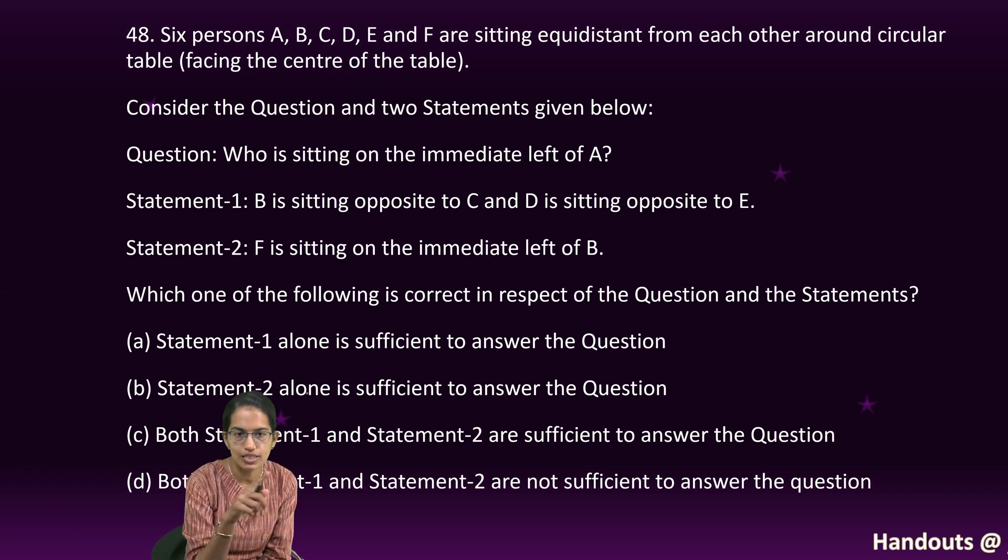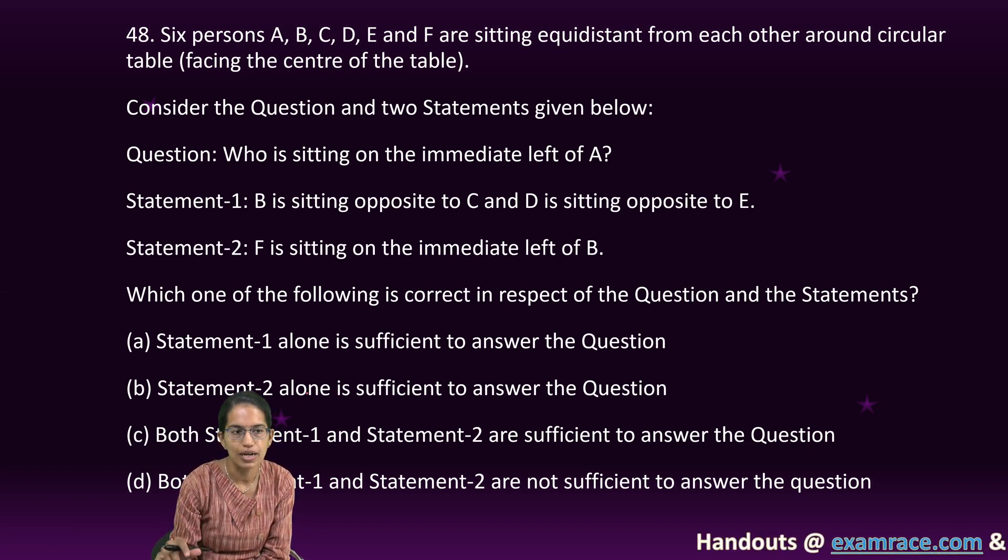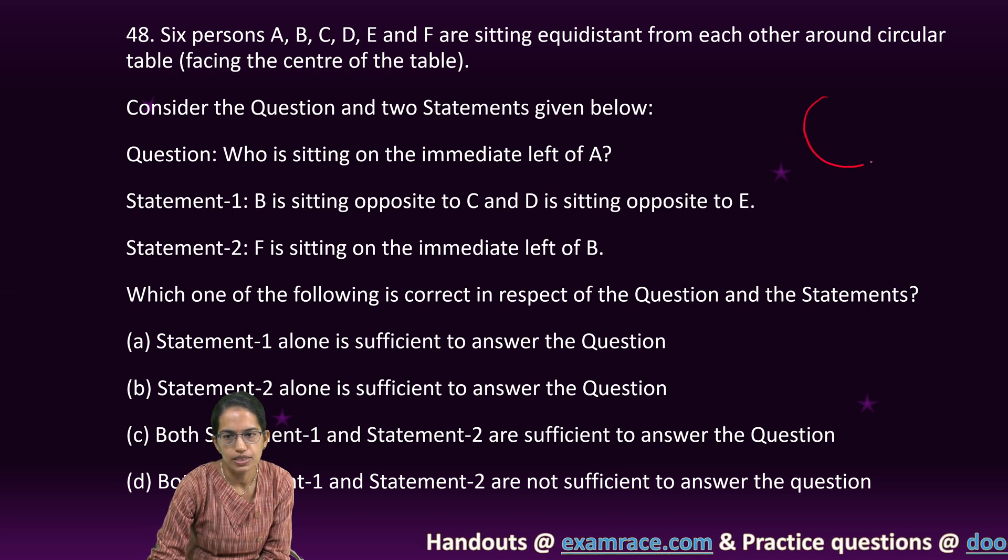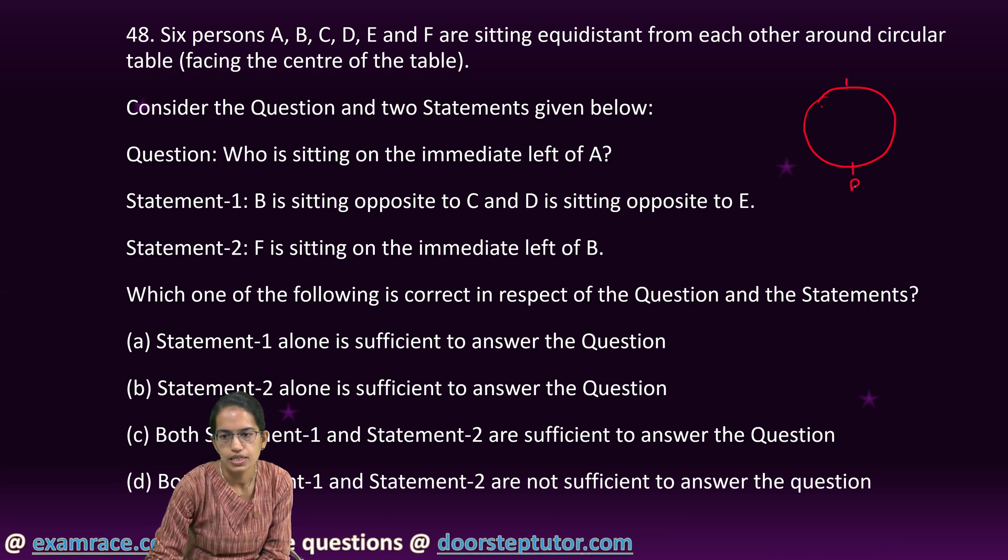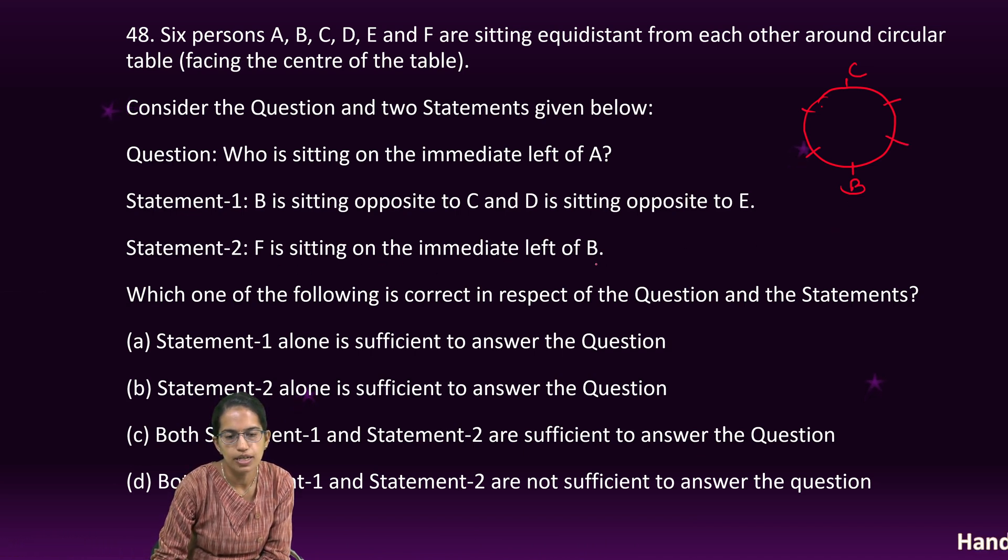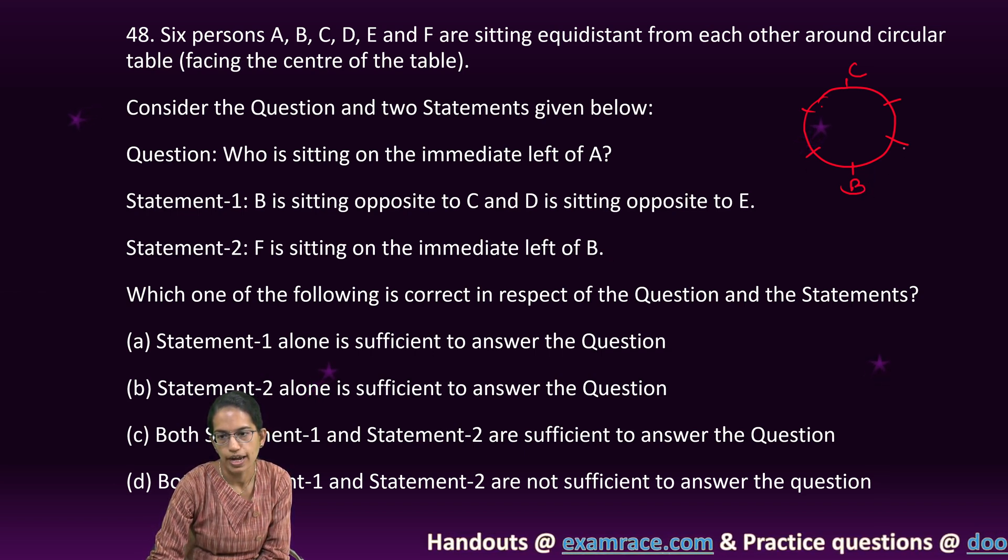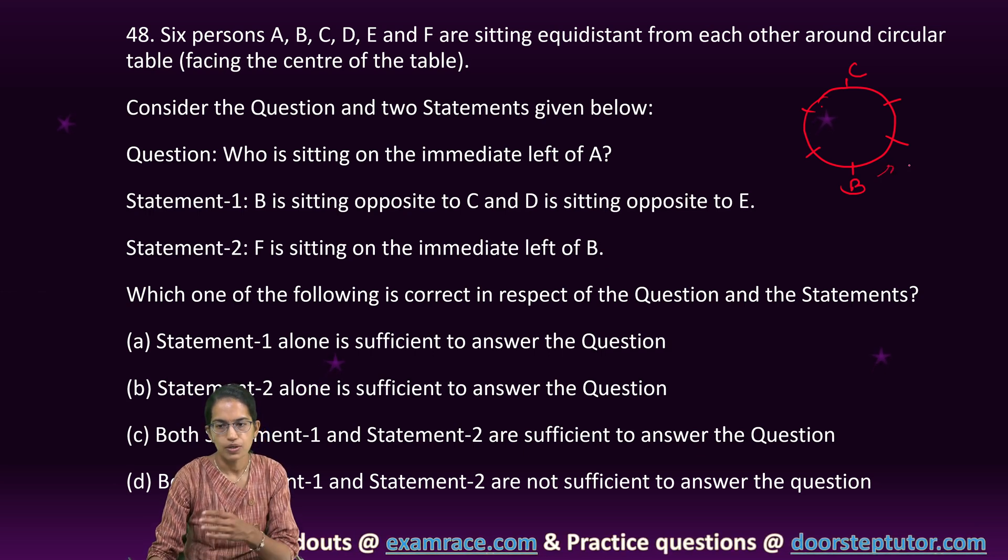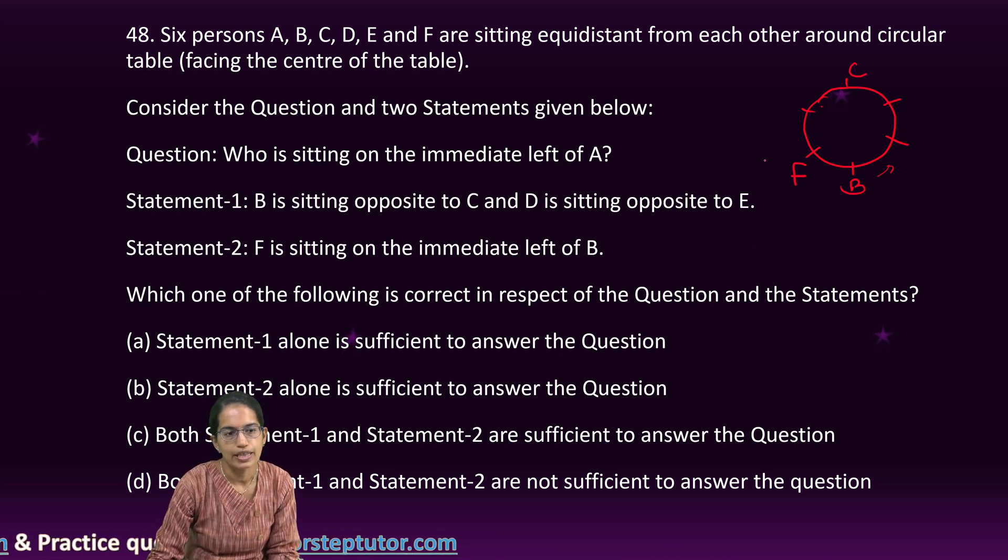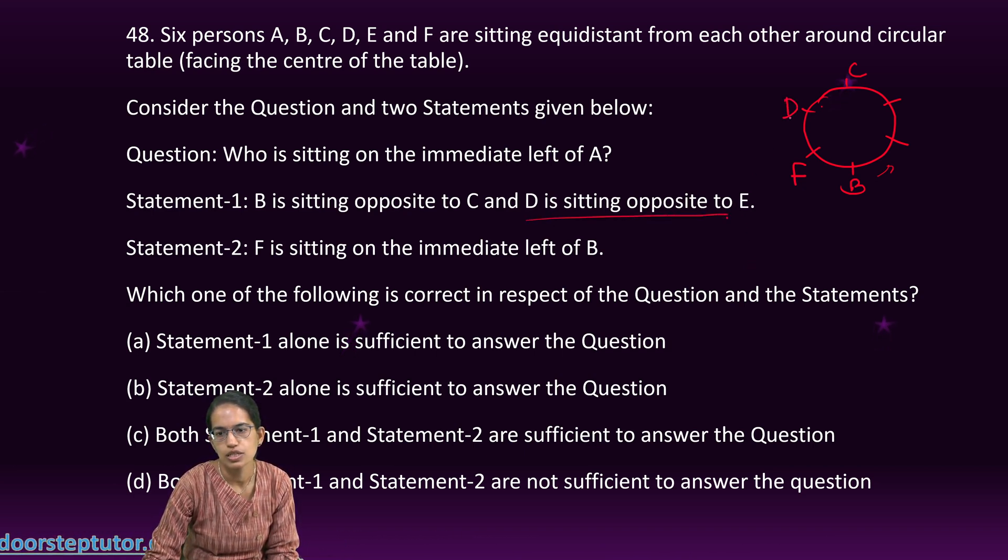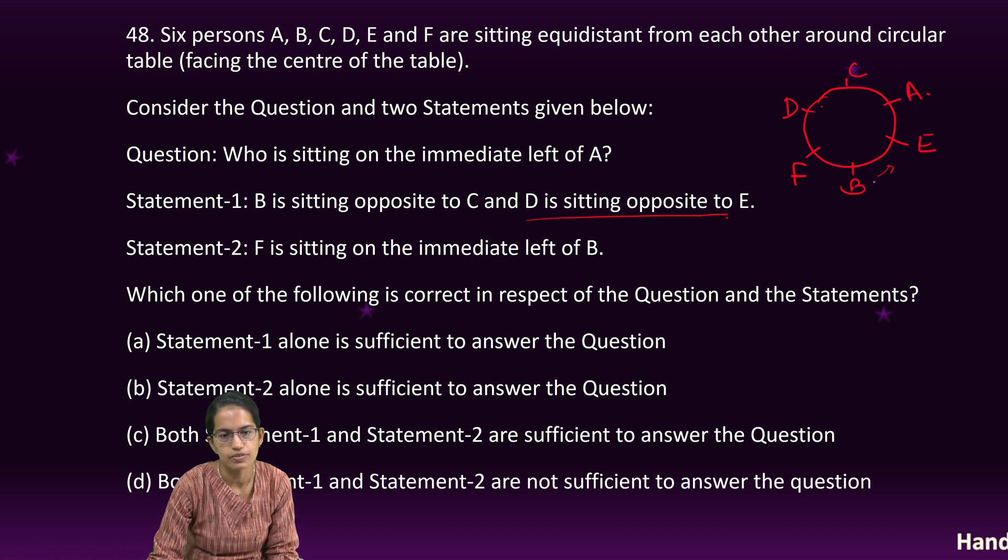The next question on circular seating with six people. Here is the circle. B sits opposite to C. F is to the immediate left of B, so immediately to the left is F. D is sitting opposite to E, so I would have A here.